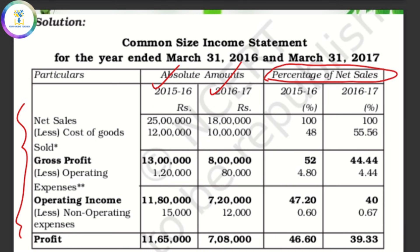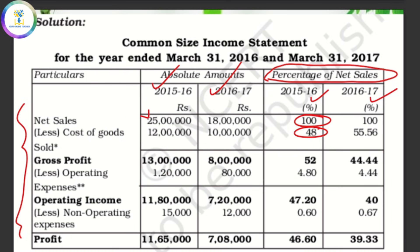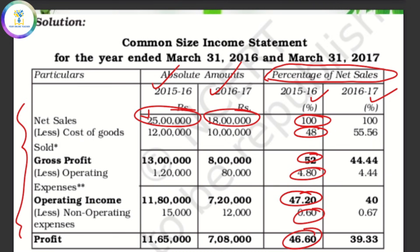Each item is expressed as a percentage of the net sale. For example, 25 lakh divided by 25 lakh into 100 equals 100% for net sales. Then cost of goods sold: 12,000 divided by 25 lakh into 100 equals 48%. Then 13,000 divided by 25 lakh. For the next year 2016-17, net sales are 18 lakh: so 18 lakh by 18 lakh into 100, 10 lakh by 18 lakh into 100, 8 lakh by 18 lakh into 100, 80,000 by 18 lakh into 100. That is each item divided by the net sale into 100 to get the common size income statement.